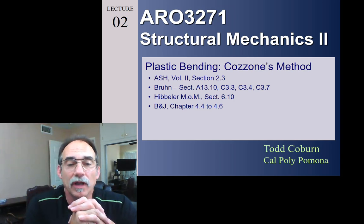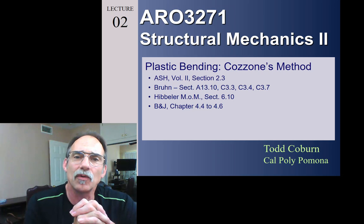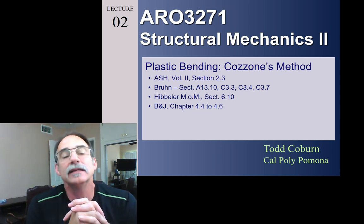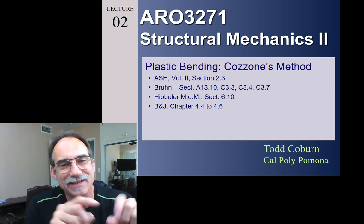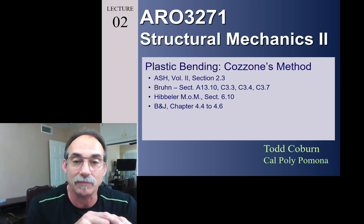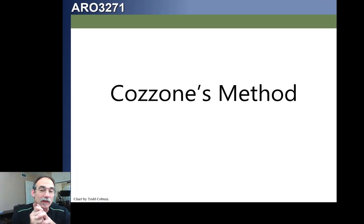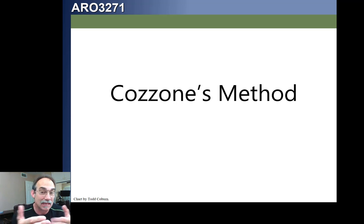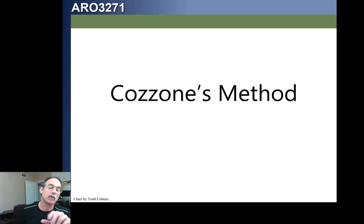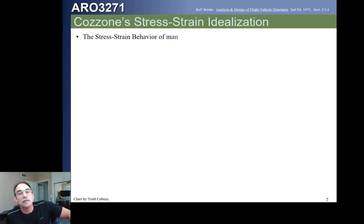This is Todd Coburn of Cal Poly Pomona with lecture two of Aero 3271. Today we're going to be continuing our look into plastic bending and specifically focusing on Cozzone's method. Last time we covered plastic bending in general, the elastoplastic method, and introduced the plastic bending shape factor. Today, since we're studying Cozzone's method, we're going to look at what's different about this particular method of estimating plastic bending.